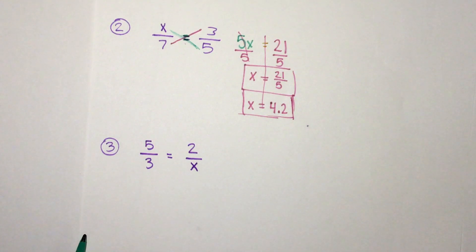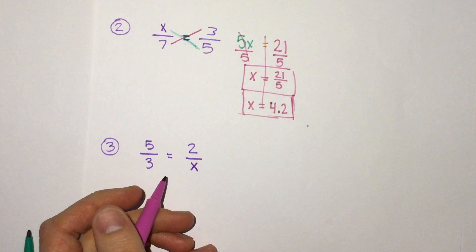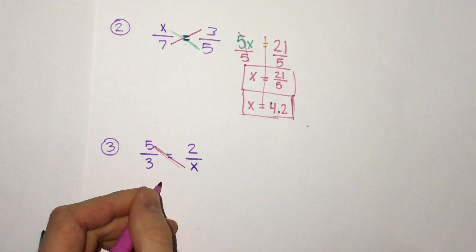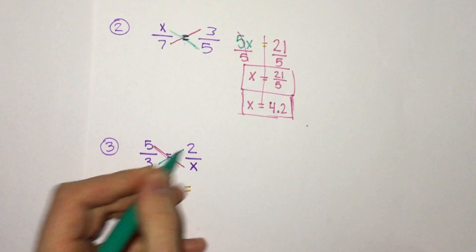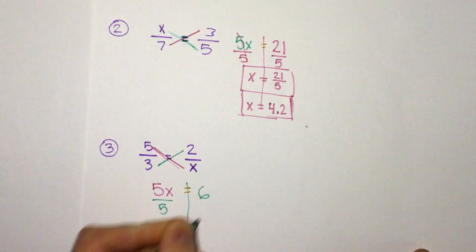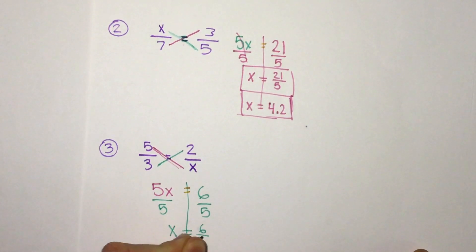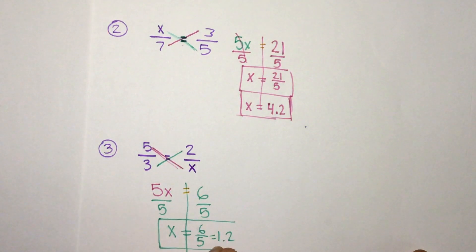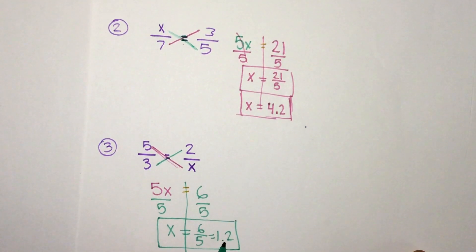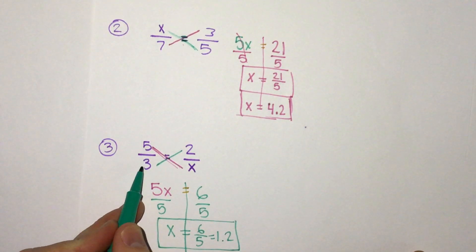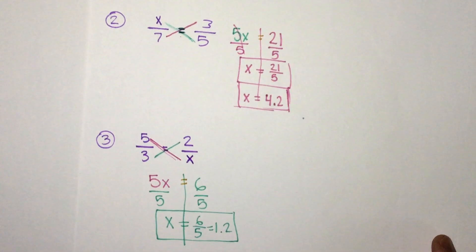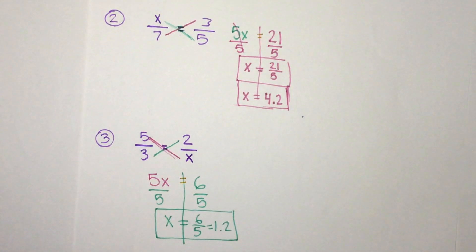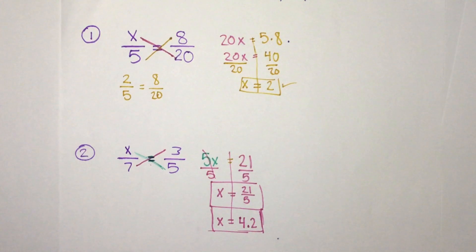And one more example here, we notice the x is in the denominator. That's okay. We still do the same thing. We have equal fractions, so we can multiply the diagonal: 5 times x equals 2 times 3, so 6. And again this one is divided by 5, so we get x equals 6 fifths or 1.2 as our answer. And we can always check if we look here. Here the 5 thirds, the number on the denominator is smaller. If we did 2 over 1.2 again the denominator is smaller, so our answer is reasonable. And we can always check by just dividing each of these fractions on the calculator.